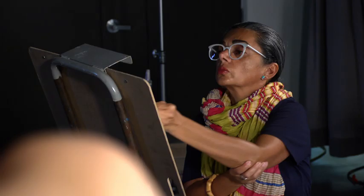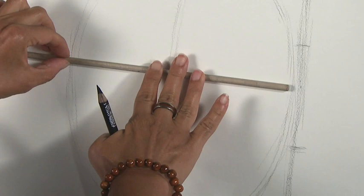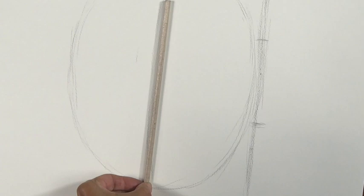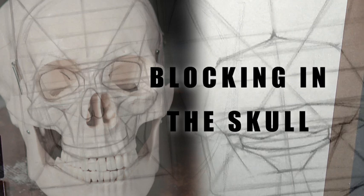Measure the width of the head of the model and compare it to the height. Now check the width and height of the head on our drawing and make the necessary adjustments. Now we have a simplified shape which represents the proportions of the skull.